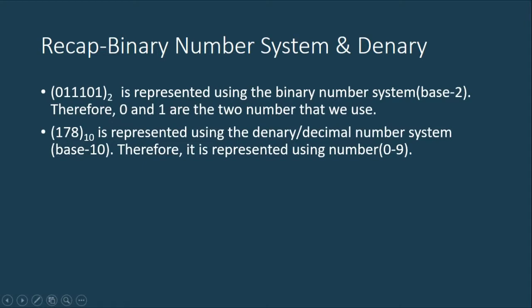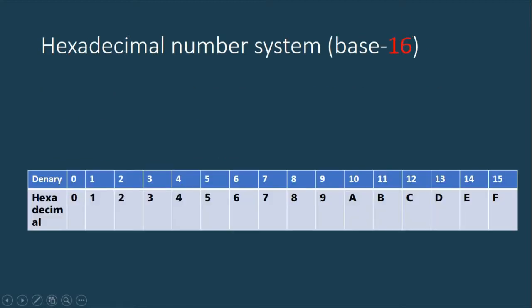Now 178, you can see a base 10 here. Therefore, it is a denary decimal number system. We write it as base 10. Therefore, all the different number values that we're going to use is 0 to 9. So these two number systems we have already studied them.